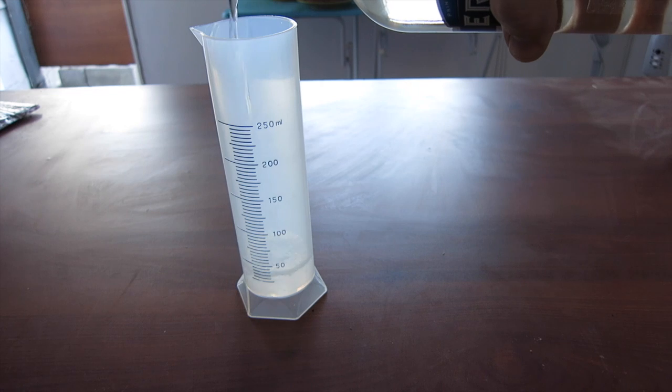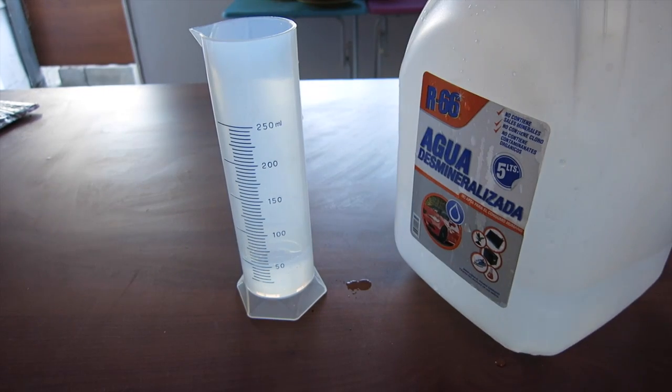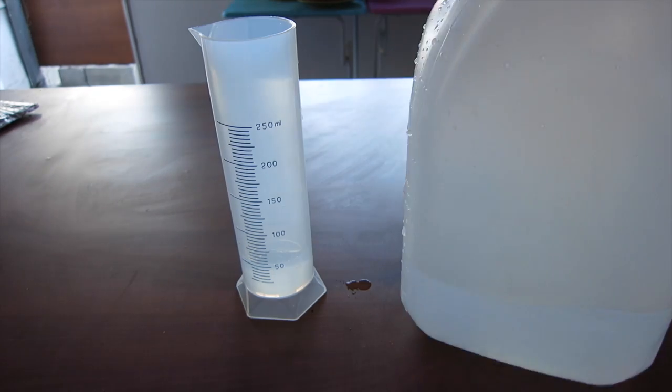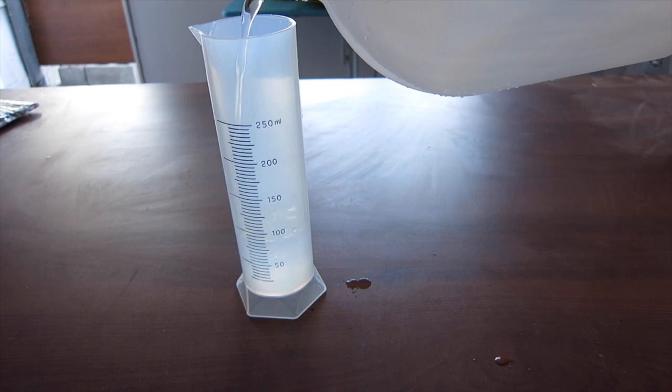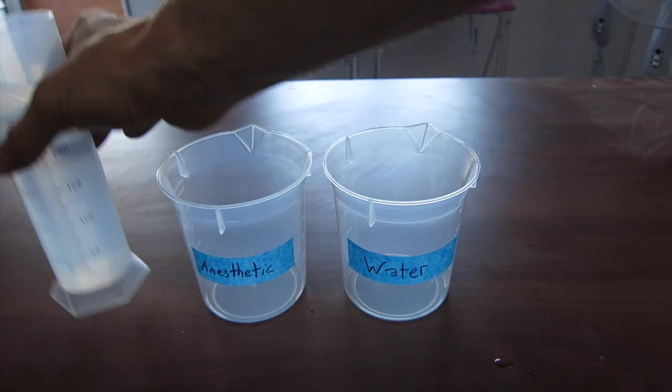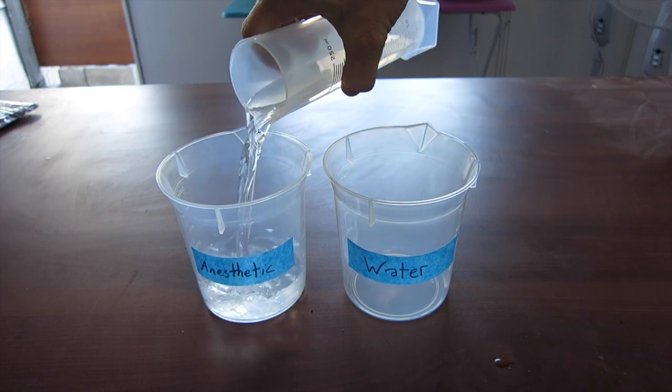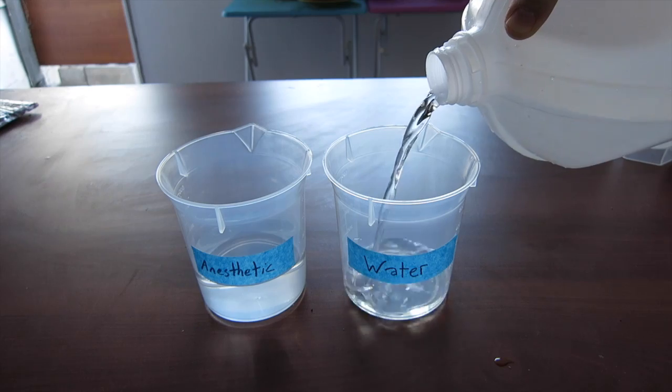As you have done before on our other worm experiments, you'll need to prepare a 10% alcohol solution. This is most easily done by mixing 1 part vodka to 3 parts water, or 50 milliliters of vodka to 150 milliliters of water to make 200 milliliters of 10% alcohol solution. Add this anesthetic solution to one container and water to another one. You are now ready to go get your worms.